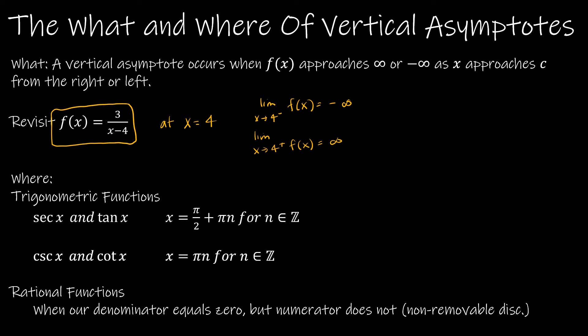So if we were to think about that function, which is a rational function, that is where that asymptote is going to occur. So our asymptote is going to be at x equals 4.